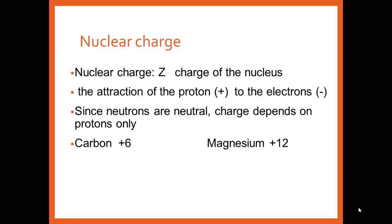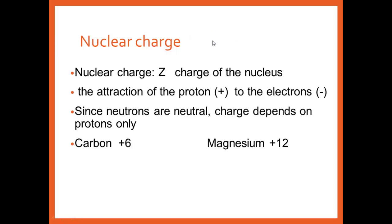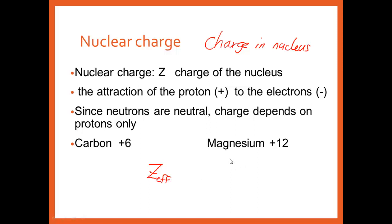Nuclear charge — just what it sounds like, charge on the nucleus. So remember what's in the nucleus? Protons, and they're positive. The electrons make the overall atom neutral, but I'm talking about the nucleus, so the number of protons is going to be the charge. Now, Z is what you see, and we will start talking about an effective charge — how much of a pull do those protons really have on those electrons? But if it's just talking about the nuclear charge, we're talking about the positive protons.